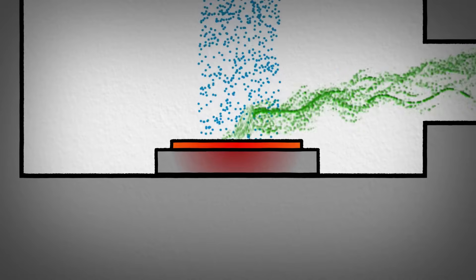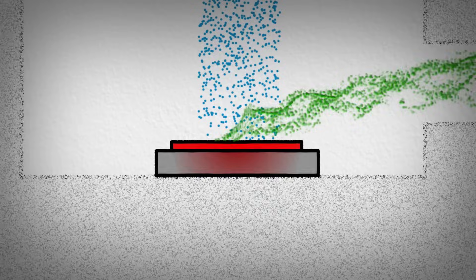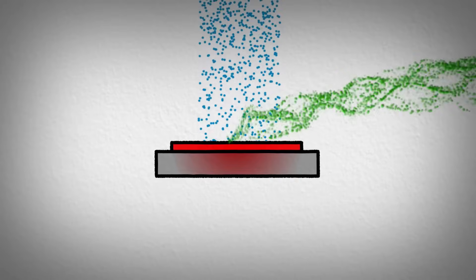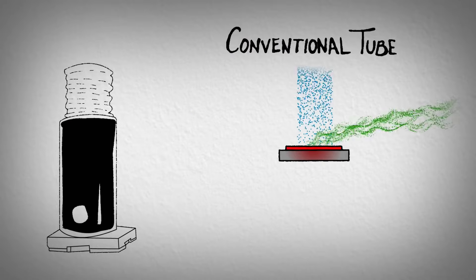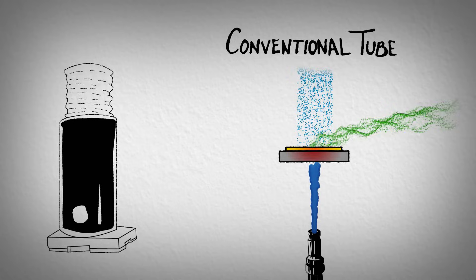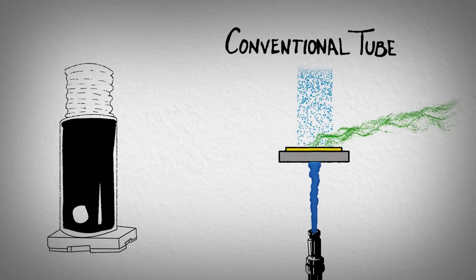In addition to creating X-rays, a large amount of the energy is converted into heat, requiring the anode to be cooled. In the traditional tube, the large footprint of the wide electron beam limits heat dissipation, requiring the anode to be water-cooled.